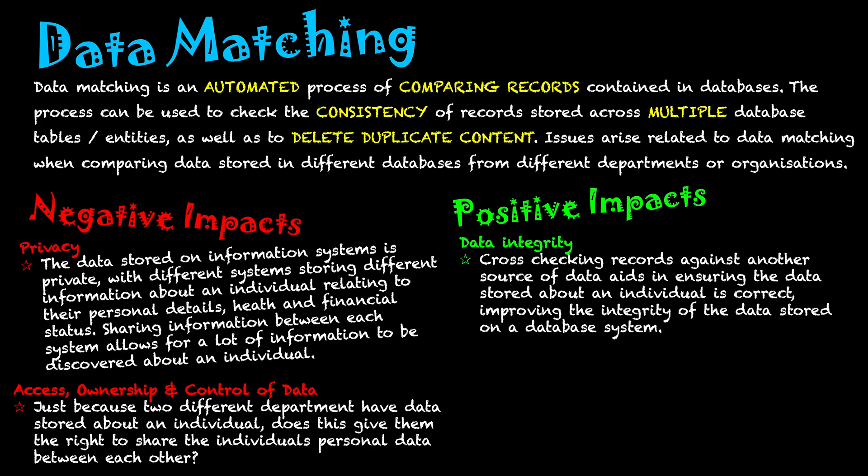Data matching also helps with normalization and reducing data redundancy by deleting duplicate content. When duplicate data exists, editing it in one area means it must also be edited in another. If a relationship is formed and databases are connected — particularly within the same organization — updates can be synchronized, maintaining data accuracy and keeping it correct and up-to-date.